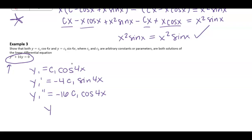Notice when I plug that in to y double prime plus 16y, I would get negative 16c1 cosine of 4x plus 16 times y. And yes, that does give me 0.